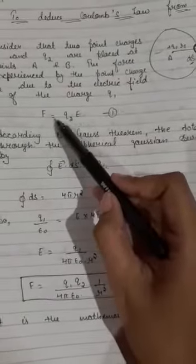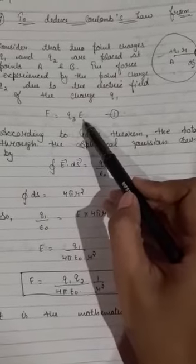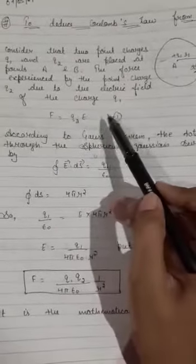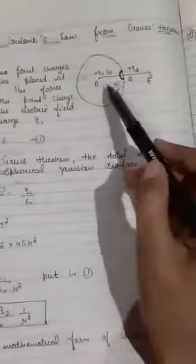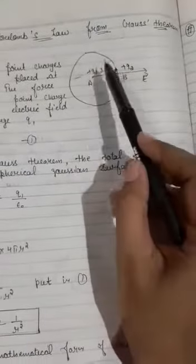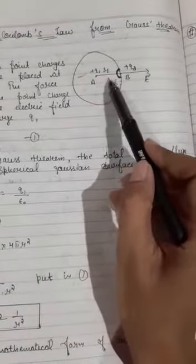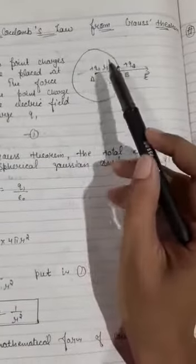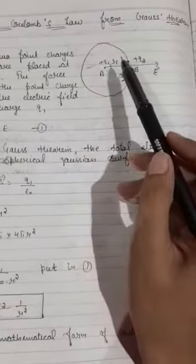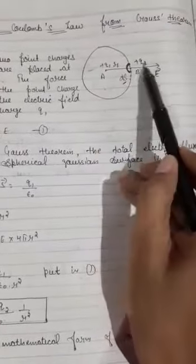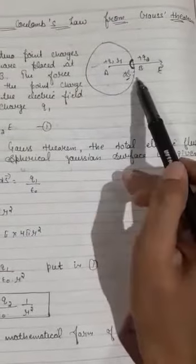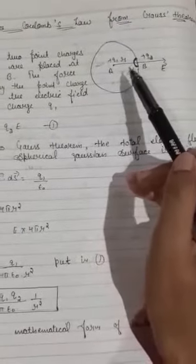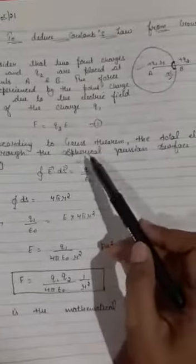Now according to Gauss theorem, we know that whenever charge is placed in the surface, there will be the generation of electric field lines, and the number of electric field lines passing through the surface is known as the electric flux. So as per the Gauss theorem, the total electric flux through the spherical Gaussian surface is given by E vector dot ds vector equals q1 upon epsilon not.